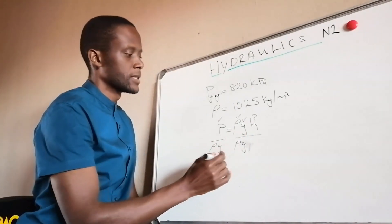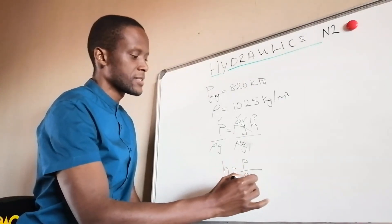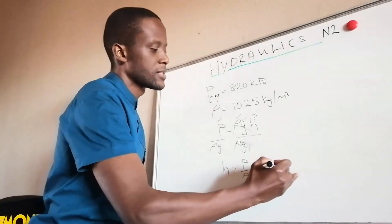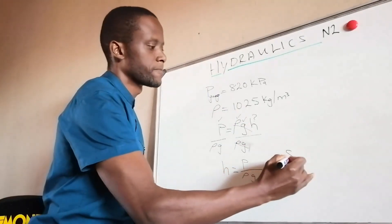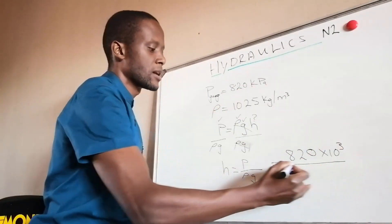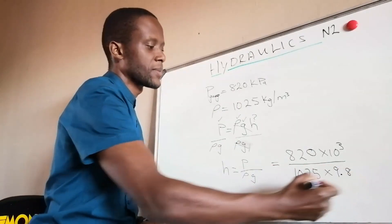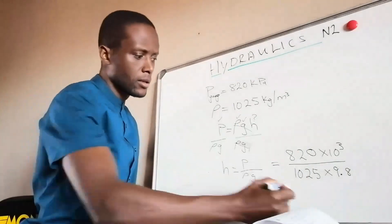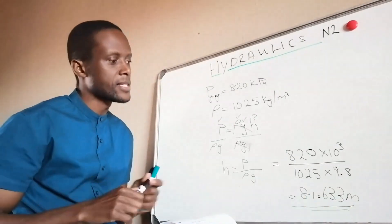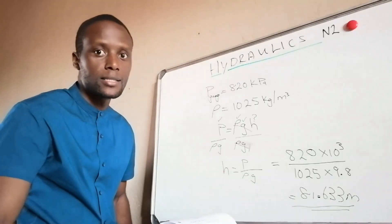Height equals pressure divided by density times acceleration due to gravity. Substituting: our pressure is in kilo so we multiply by 10 to the power 3, divided by density 1025, times gravity 9.8. Our answer is 81.633 meters — that is the depth at which the diver is.